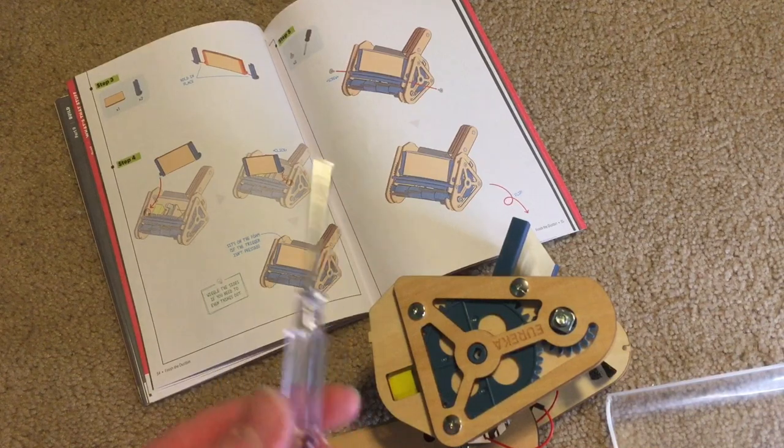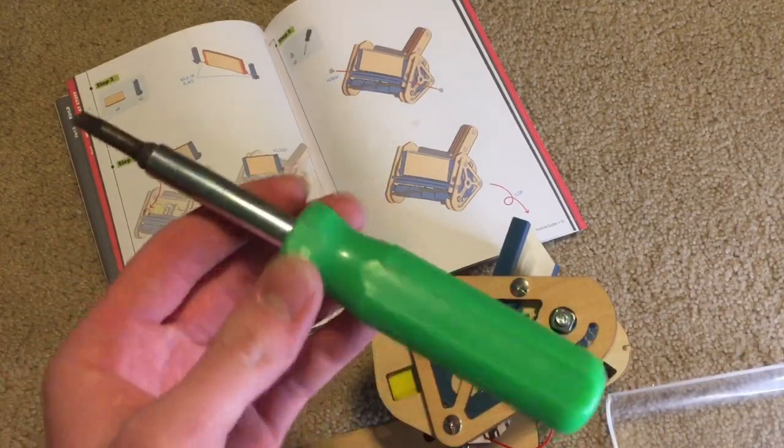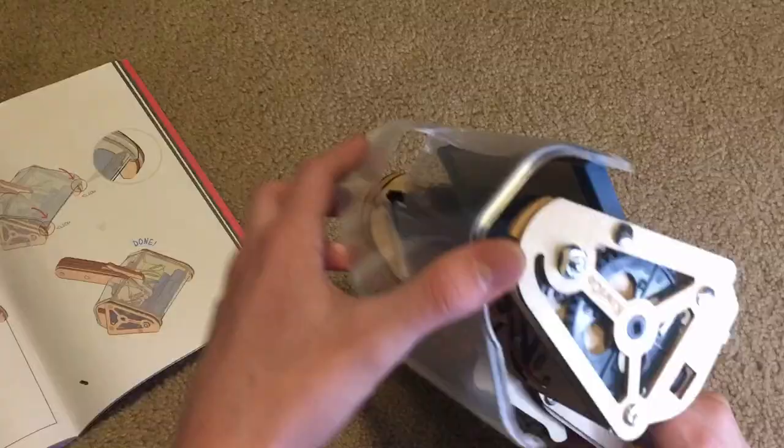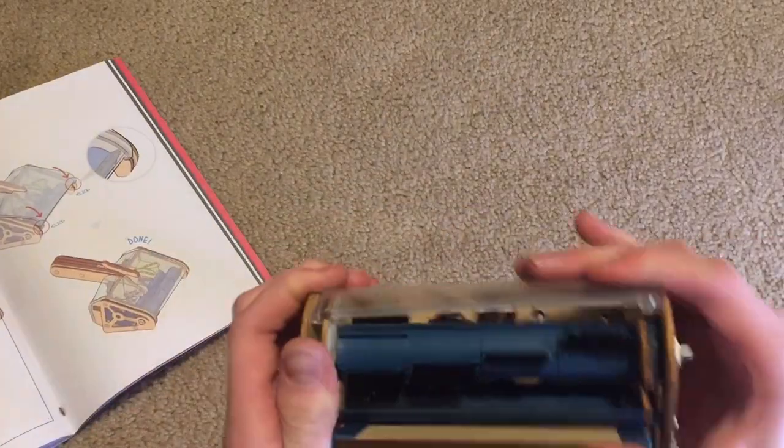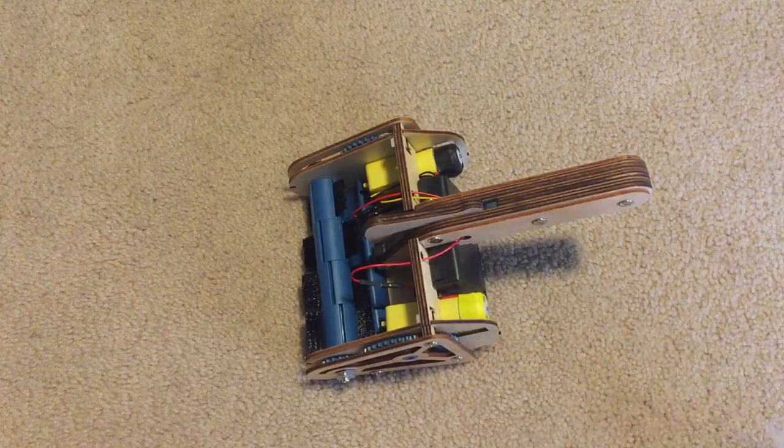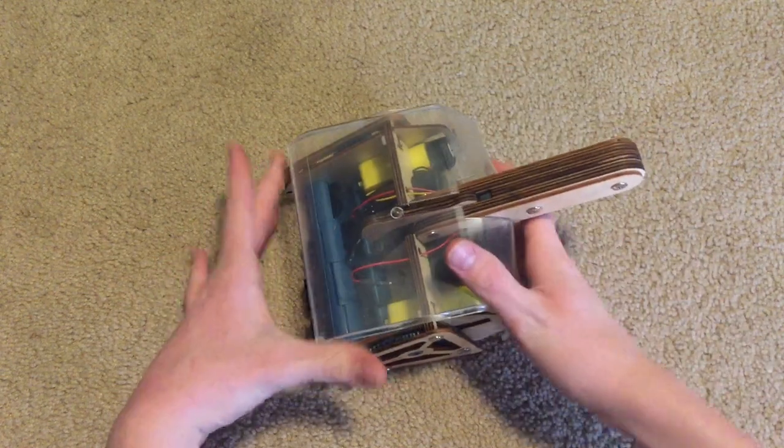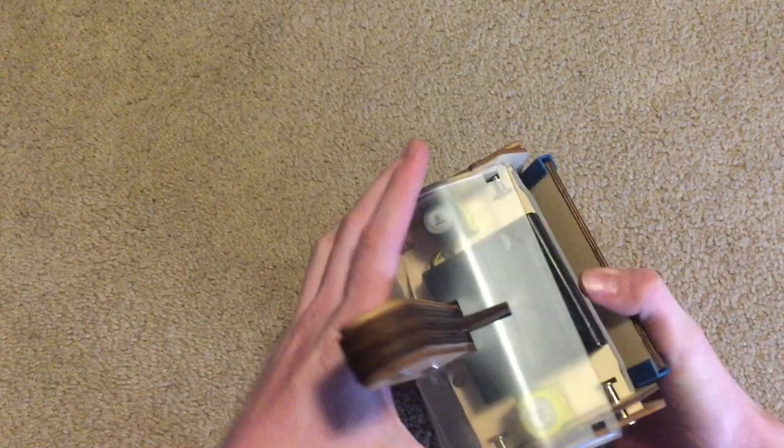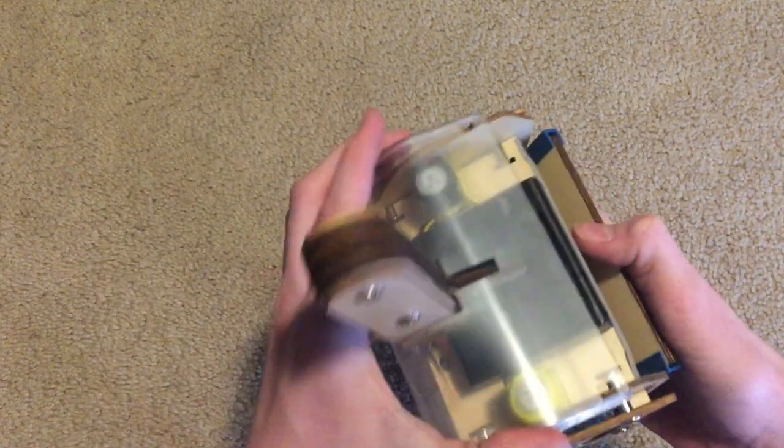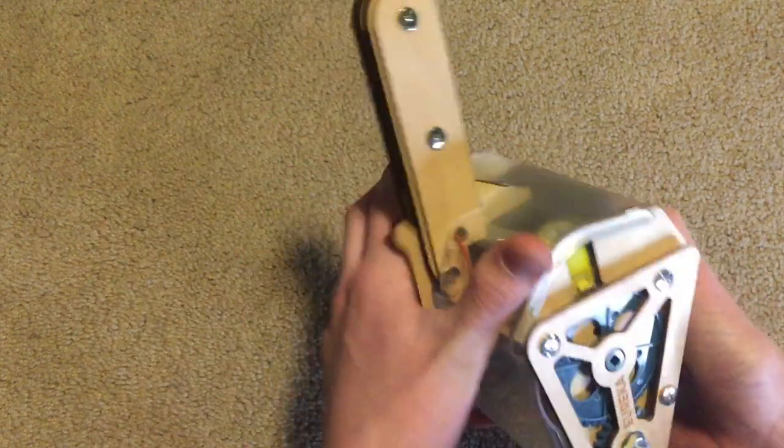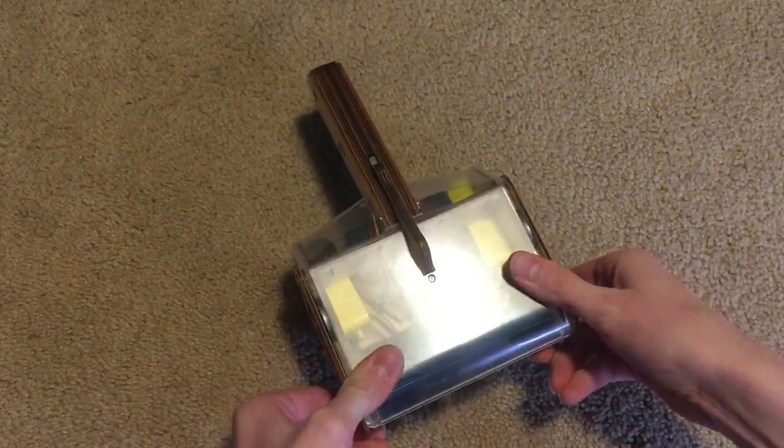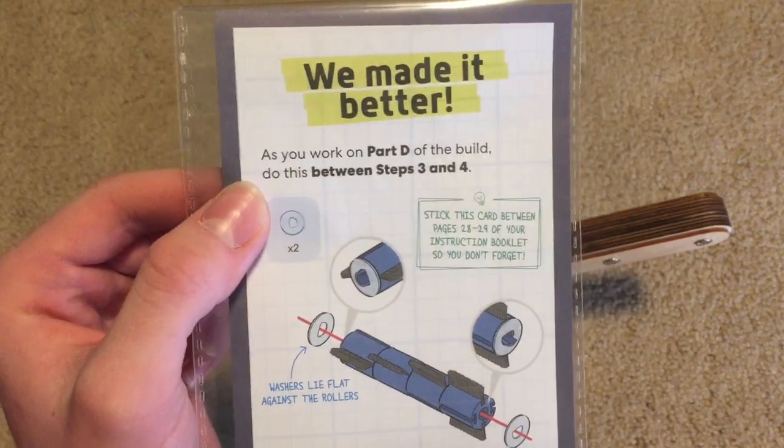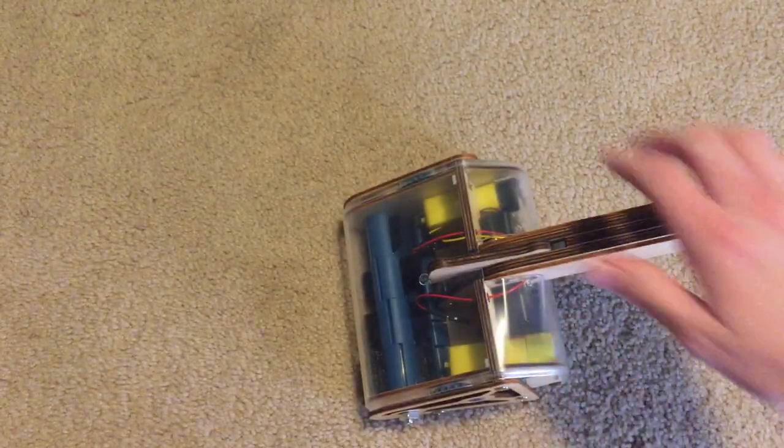Even though KiwiCo crates have their own tools, I like to use my own because it's easier to use. All right, so the last step is just to put this plastic cover on here. I just need to put this where the tab is. Okay, also I put these plastic discs on the brush roll, so it should work now.